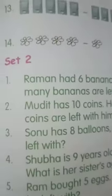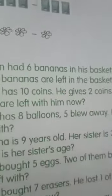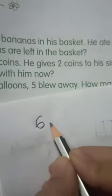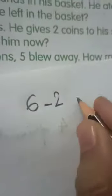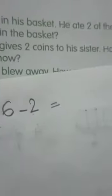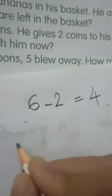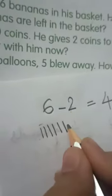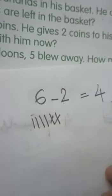In set two we have word problems. The first word problem is: Raman had six bananas in his basket. He ate two of them. We have to find how many bananas are left in the basket. Six minus two is four. You can also draw lines for subtraction — one, two, three, four, five, six — subtract two: one, two — so how many are left? One, two, three, four.